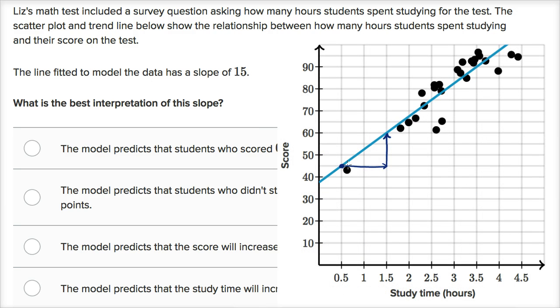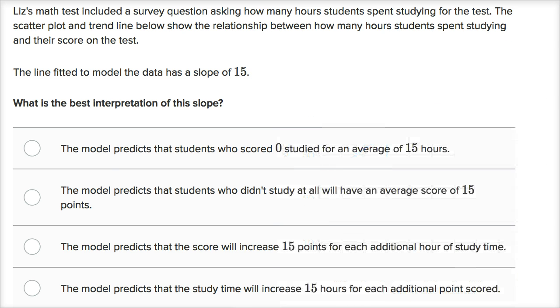Students, if you believe this model, someone who doesn't study at all would get between 35 and 40 points, so like a 37 or a 38. So I don't like that choice.